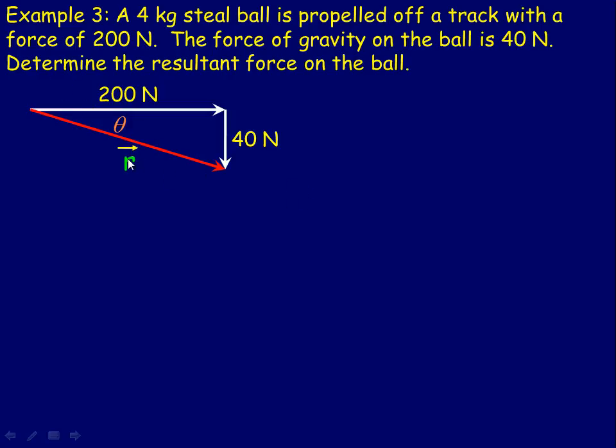And we'll call it R, R for resultant. So the length of R, again using Pythagoras' theorem, would be the root of 200 squared plus 40 squared, which is, 200 squared plus 40 squared is 41,600. Taking the root of that we get about 204 newtons. So the size of the force is about 204 newtons.